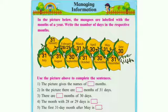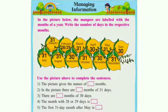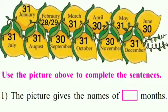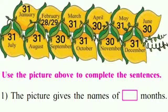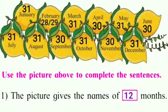So here we complete writing the number of days for the respective months. We now have a few sentences which we have to complete. Let's read: use the picture above to complete the sentences. Our first sentence: the picture gives the names of dash months. Children, how many months are being given? Very good, 12. So we will write 12 in the box.